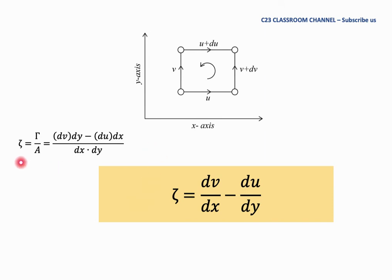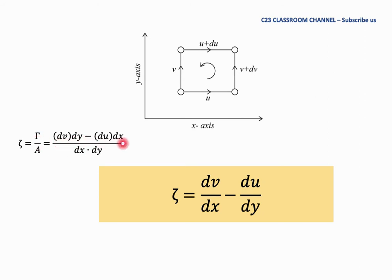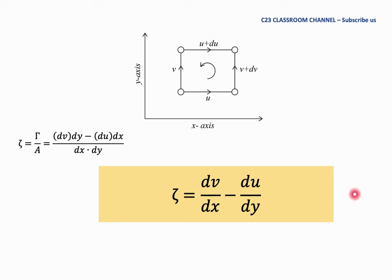To calculate the vorticity zeta, the equation is gamma divided by the area. The gamma value of dv·dy minus du·dx comes from this calculation. We divide gamma by the area of this rectangular shape, which equals dx times dy. Solving this equation, we get zeta equal to dv/dx minus du/dy. This is the value of vorticity for Cartesian coordinates — please remember this equation.